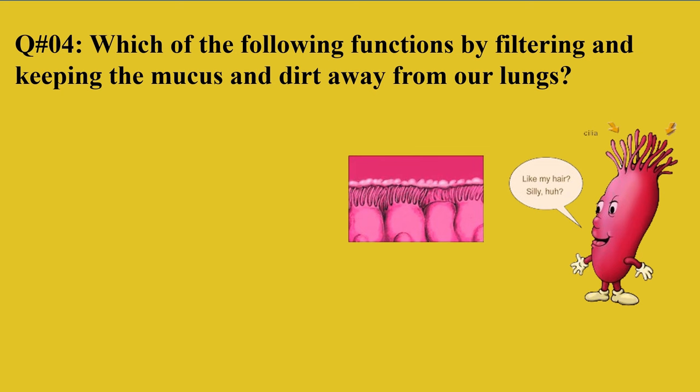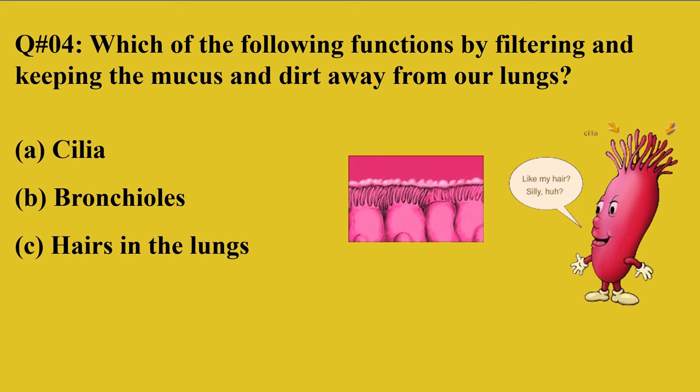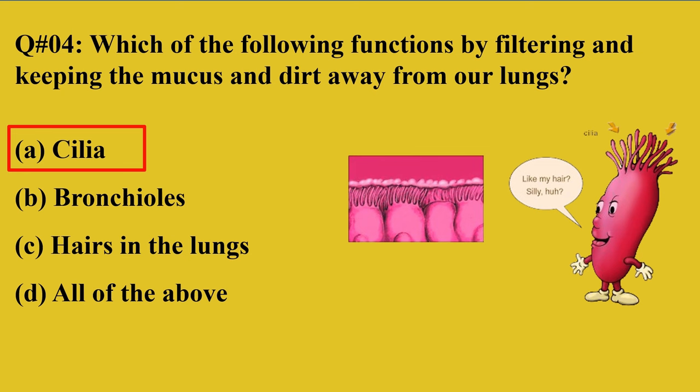Question number 4: Which of the following functions by filtering and keeping mucus and dirt away from our lungs? Option A: cilia, B: bronchus, C: hairs in the lungs, D: all of the above. The right option is A, cilia. Cilia are hair-like projections present in our upper respiratory tract that help keep dirt away from our lungs. They have forward projection movements through which dust particles are removed through sneezing and coughing.